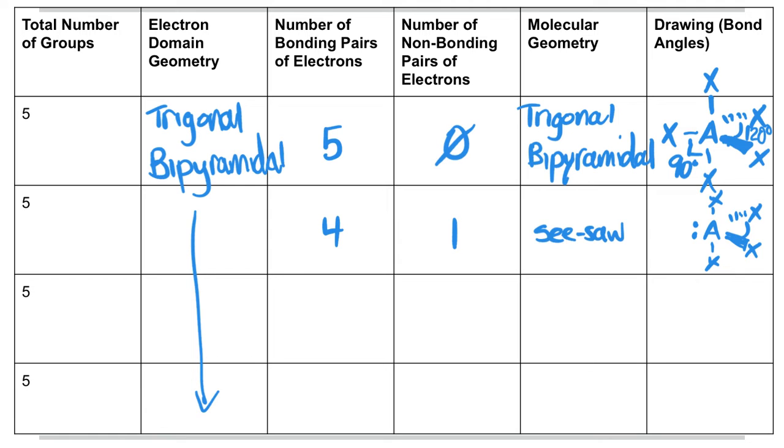Now in terms of bond angles, this bond's probably a bit less than 120 degrees, but I'm just going to write 120 degrees because we don't need to get super specific here. And then between the ones going up and down and the plane is going to be 90 degrees again.